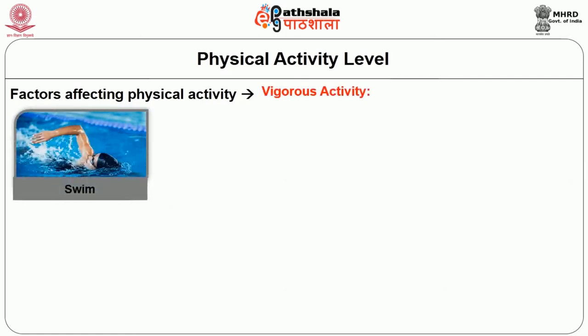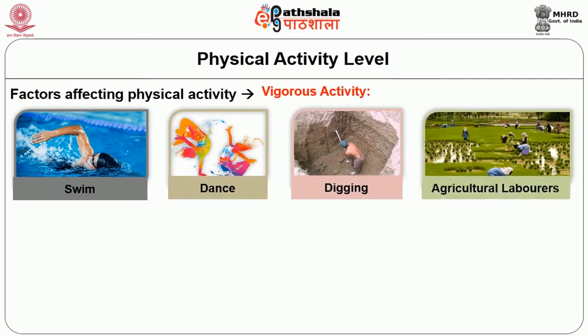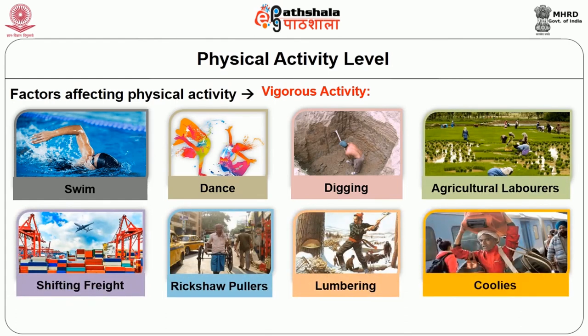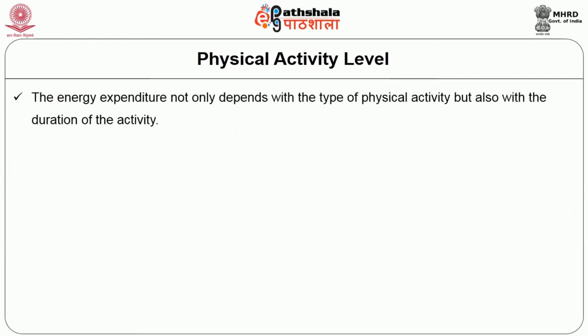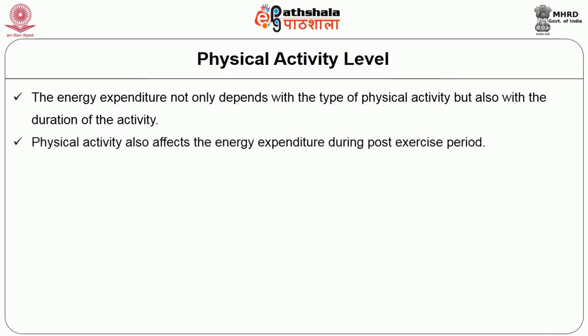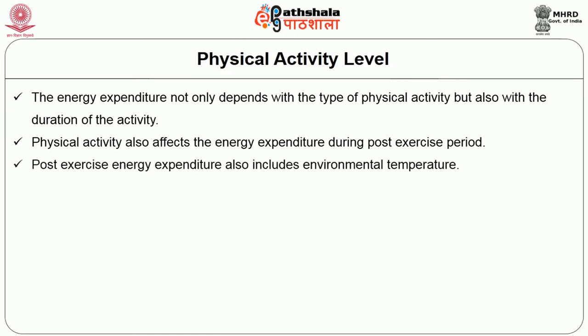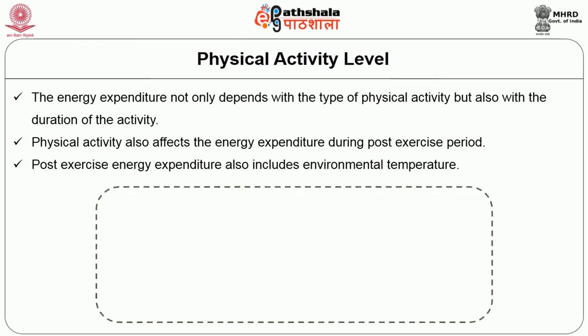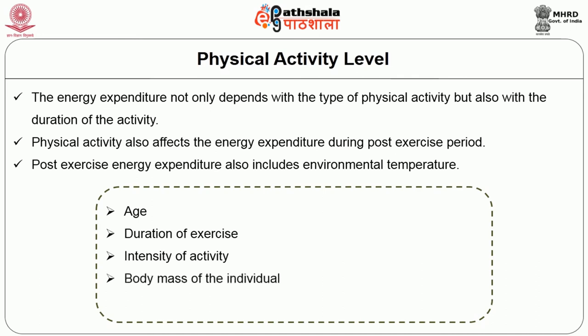Vigorous activity — people who swim, dance, jog, agricultural laborers, rickshaw pullers, lumbering coolies engaged in strenuous work for several hours. Calorie expenditure is about 250 kilocalories per hour. Energy expenditure depends not only on the type of physical activity but also on the duration. Physical activity also affects energy expenditure during the post-exercise period, which includes environmental temperature, age, duration of exercise, intensity of activity, body mass of the individual, and efficiency of performance.